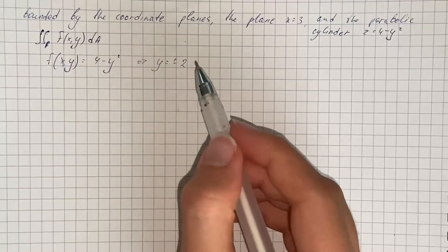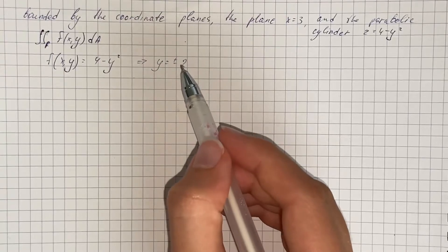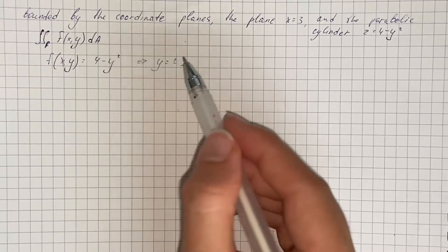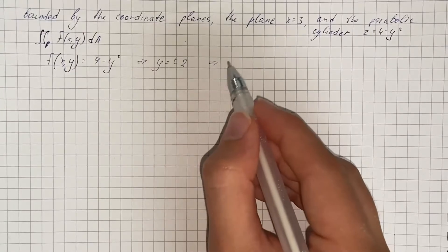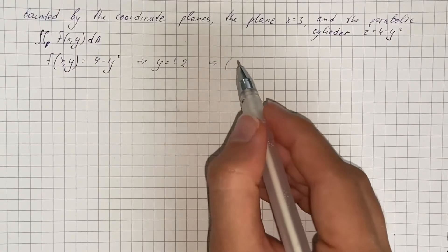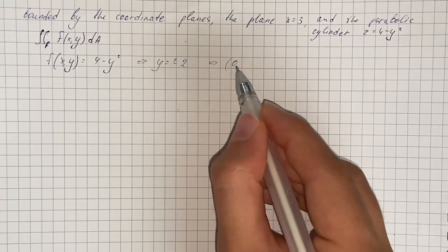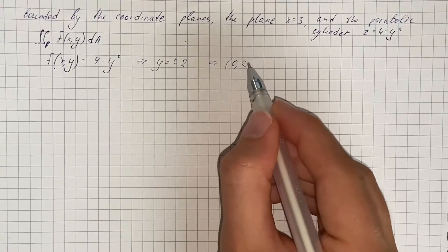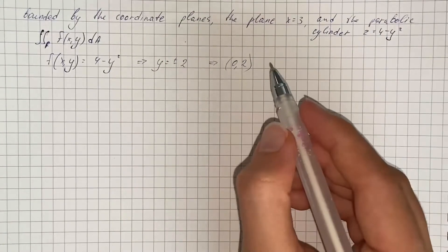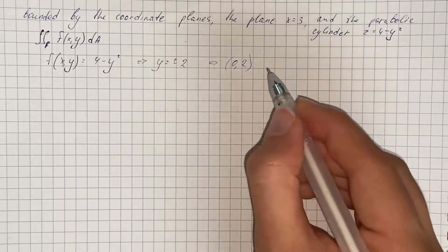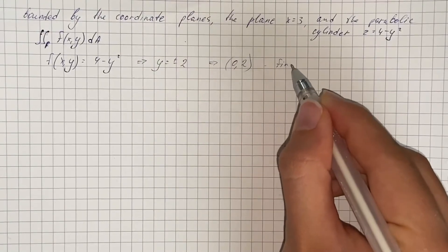Therefore the cylinder bounded by the coordinate planes in the area from negative 2 to 2. But we're going to integrate in the area from 0 to 2, because we need to find volume of the solid only in the first octant.